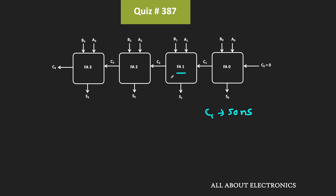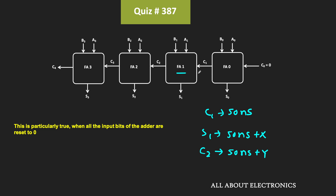If FA1 generates the valid sum output after x ns, then S1 will be available after 50+x ns. And if FA1 takes y ns to generate C2 once C1 is available, then C2 will be available after 50+y ns. But if C1 is 0, then FA1 can generate S1 and C2 in x and y ns respectively. In the worst case, if the carry propagates from the first stage to the last stage, valid sum and carry output will be available after that full propagation delay. But if an intermediate stage does not generate a carry, the final stable output can be available even before the worst case delay.